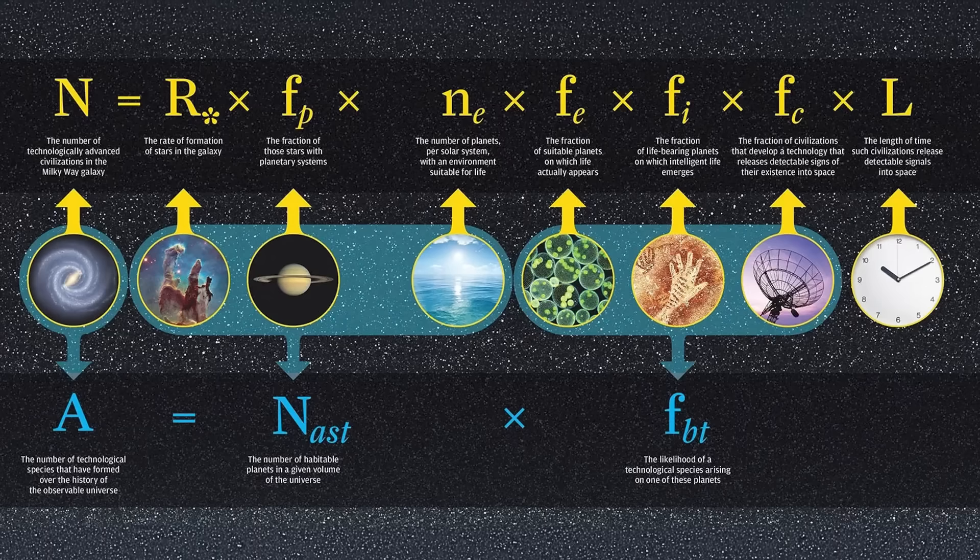The star people could figure out how many stars were forming per year; the people interested in planets could develop techniques to discover planets. By creating this equation he was essentially launching new fields. He gave astrobiology — which wasn't even a term then — a roadmap: you go do this, you go do that. It had such far-reaching effect because it broke the problem up in a way that gave useful marching orders for all these different groups.